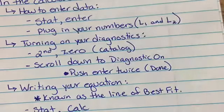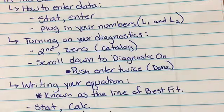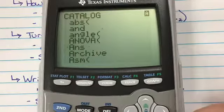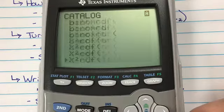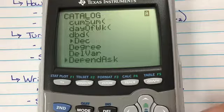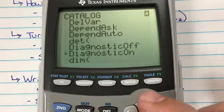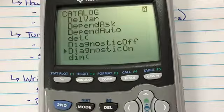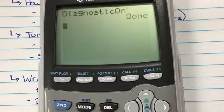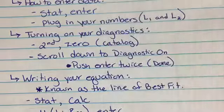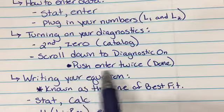Then you need to scroll down until you see diagnostic on. So you scroll all the way down. It takes a little while to get there, but once you turn it on you don't have to do it every single time. So diagnostic on, and you need to hit enter two times until you see the word done. That lets you know that your diagnostic is turned on.